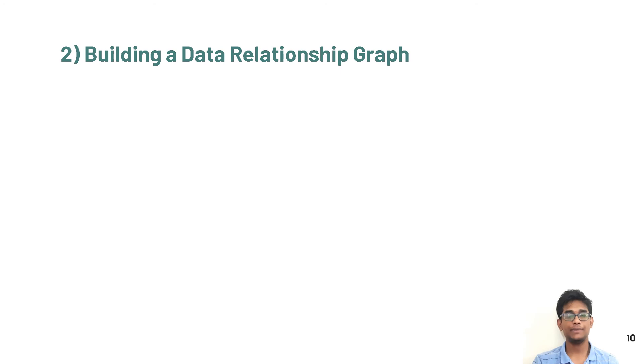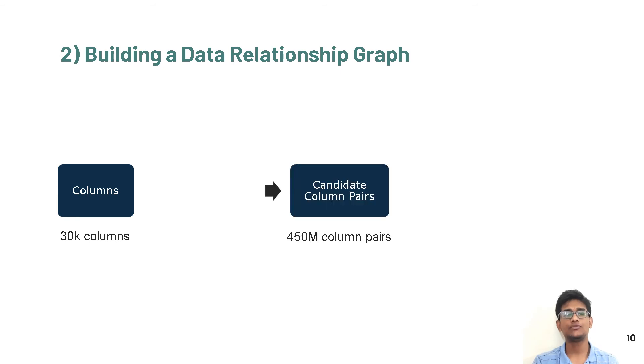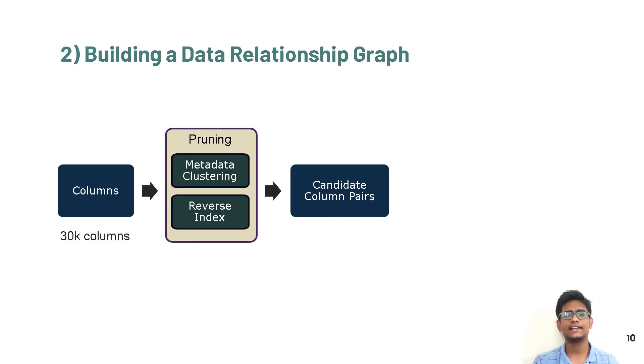Once we have built a relevance classifier, we are ready to build a data relationship graph. Consider an example dataset containing around 30,000 columns. Taking all possible pairs within this dataset can lead to 450 million column pairs. We apply two pruning techniques to reduce this. In metadata clustering, we apply k-means clustering to the column name embeddings we generate and add all pairs within each of the cluster to our list of candidate pairs.